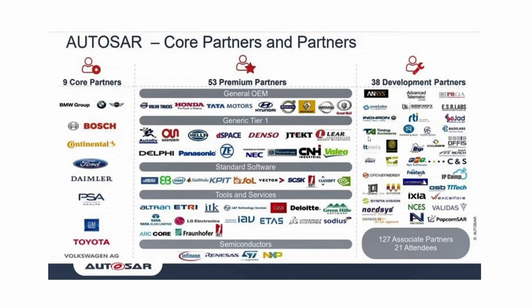In this slide, we can see who the core partners are in AUTOSAR development. There are 9 core partners, 53 premium partners, and 38 development partners. For those who want to get a job in the automotive industry, the company names can be found in this slide — including OEMs, Tier 1 companies, standard software vendors selling BSW stacks, and tool providers for AUTOSAR development.